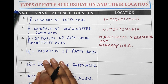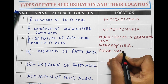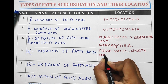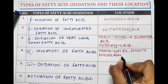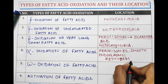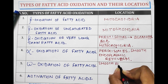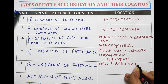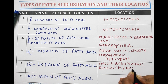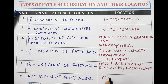Alpha oxidation of fatty acids occurs in peroxisomes as well as in smooth endoplasmic reticulum. Omega oxidation of fatty acids also occurs in smooth endoplasmic reticulum and in microsomes. Activation of fatty acids occurs in cytosol.